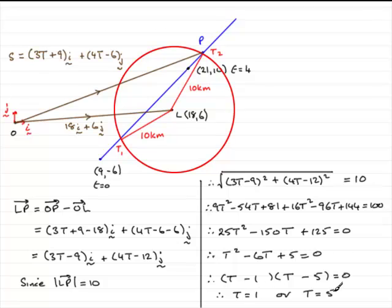So we've got the two times then, when the ship, when it's coming up here, is 10 kilometers from L. T1 is obviously going to be after one hour, and T2 is going to be after five hours.